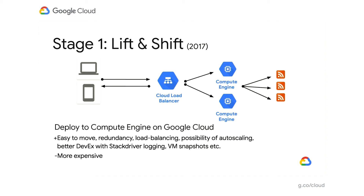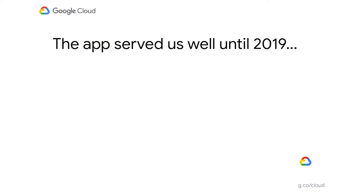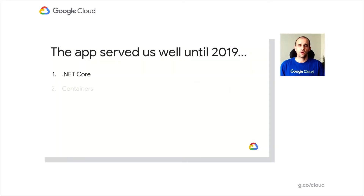From 2017 to 2019, there were a few interesting things happening in the tech world, especially in the .NET world. First of all, there was this new version of .NET called .NET Core, and the most interesting thing about it is that it can run on multiple platforms — Linux, Mac, or Windows. Secondly, there was a lot of hype around containers. Everyone was talking about how to take a single monolith application running on a VM and break it down into smaller pieces and run them in containers in a much more efficient way.